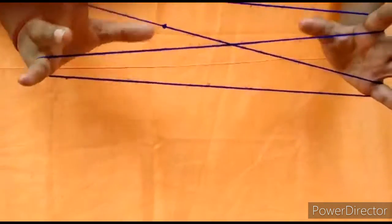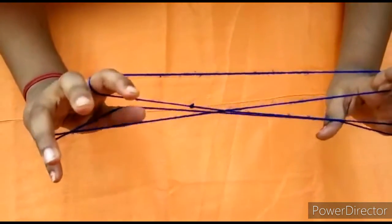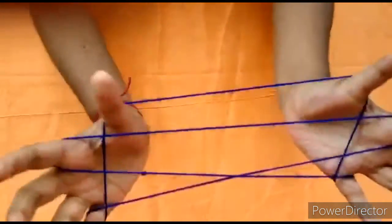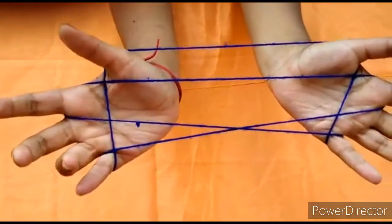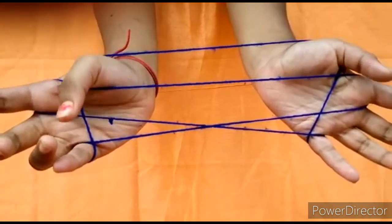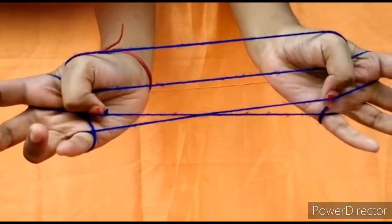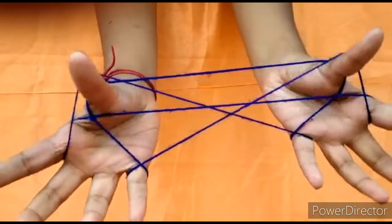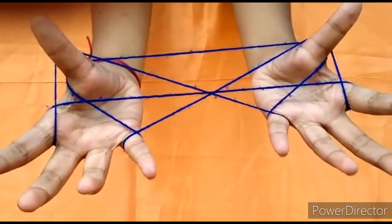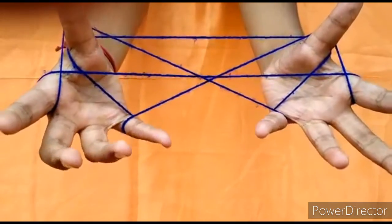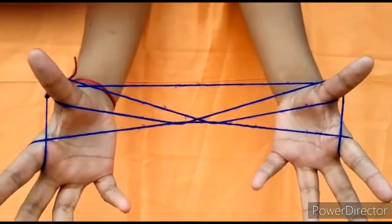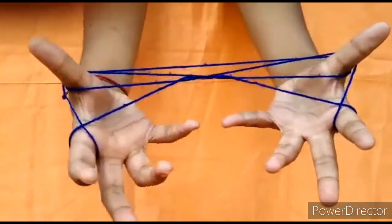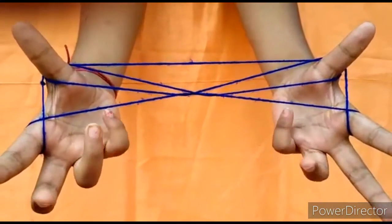Now come down and take the last string. Take your index finger again and drag the start string, this one. Now remove your pinky finger. Do not take it like this - it should only remove by itself.